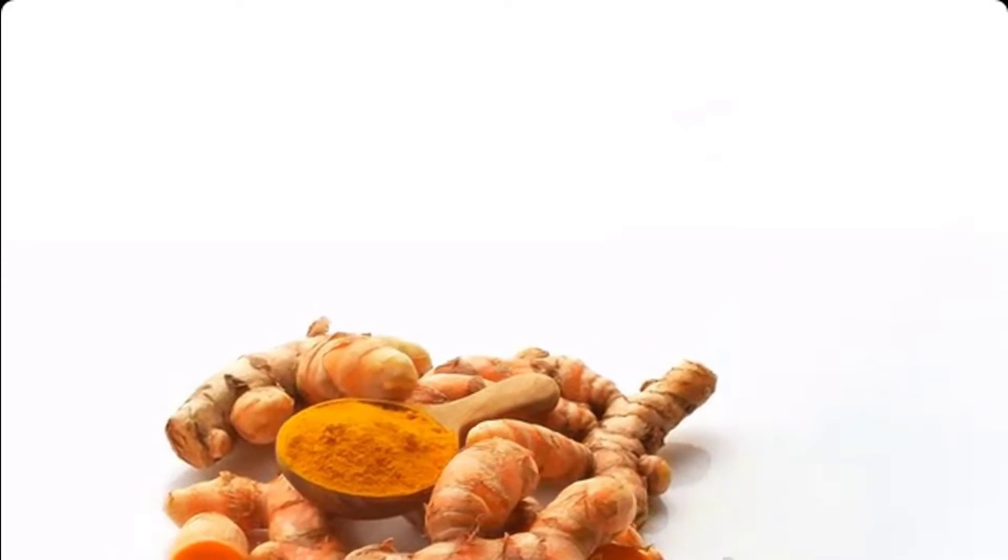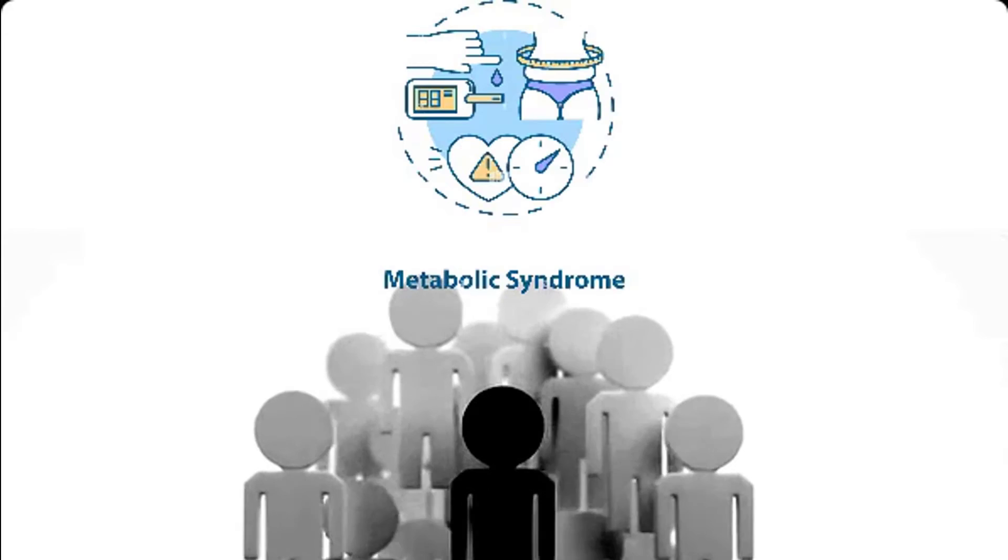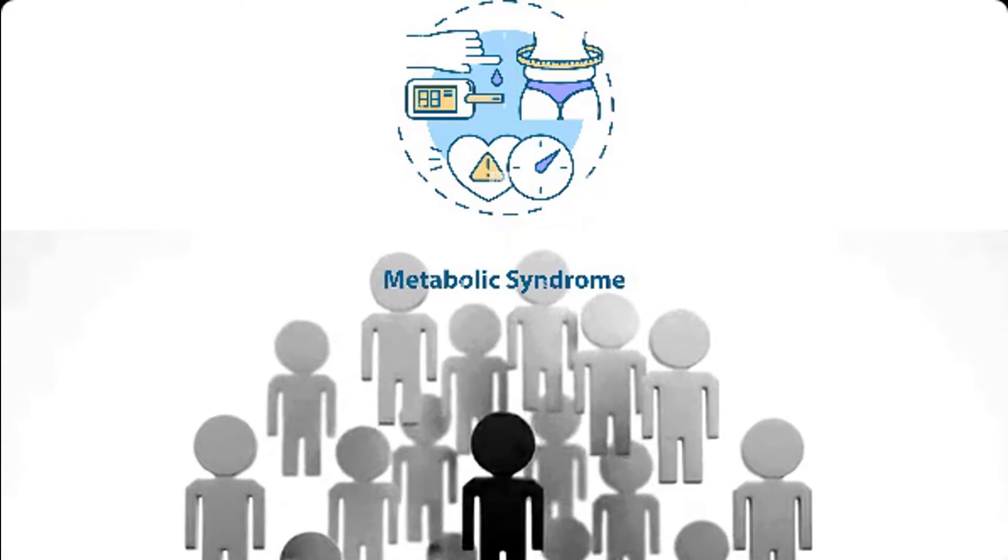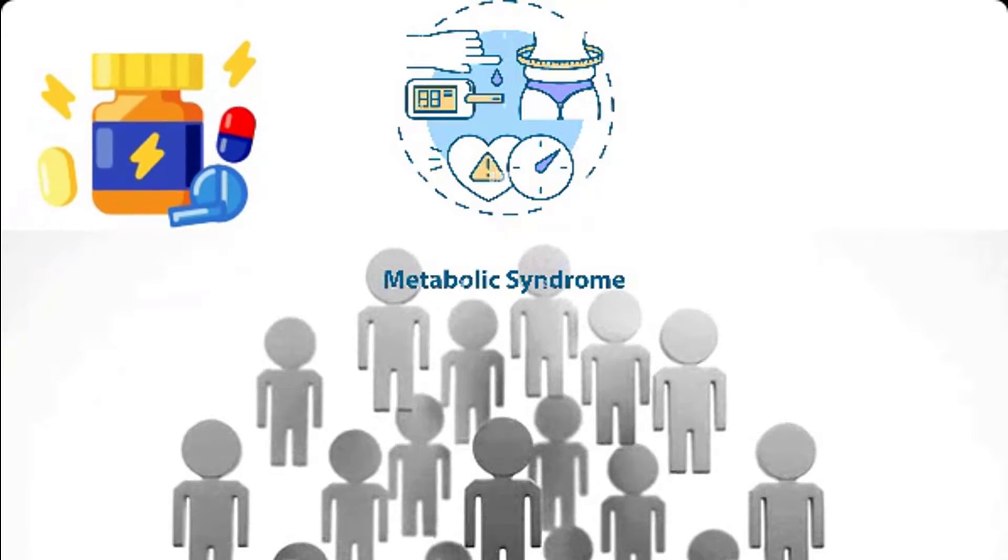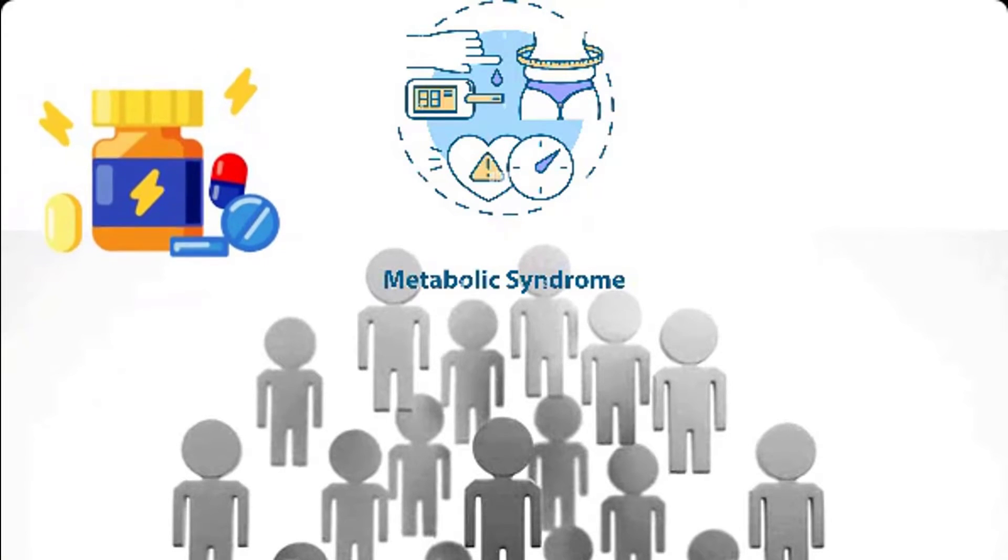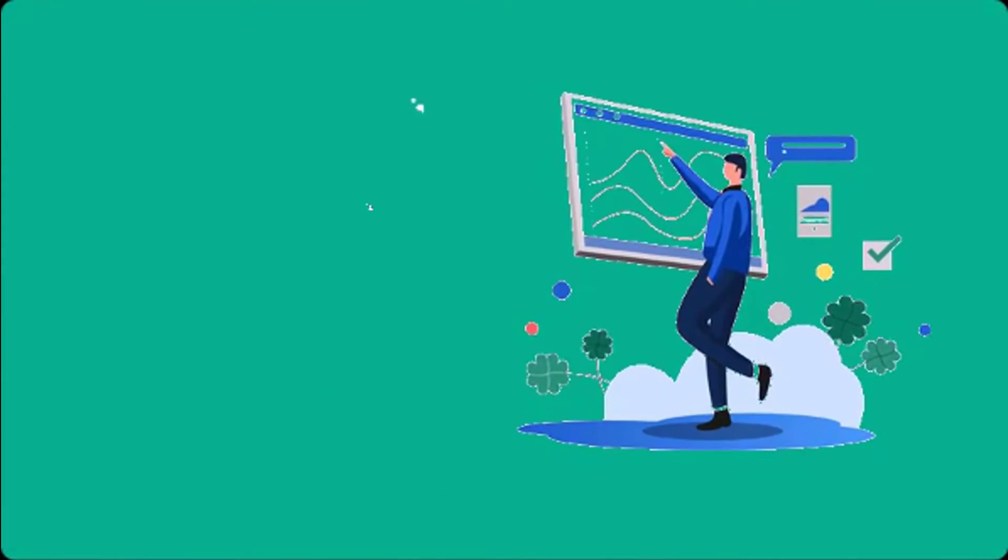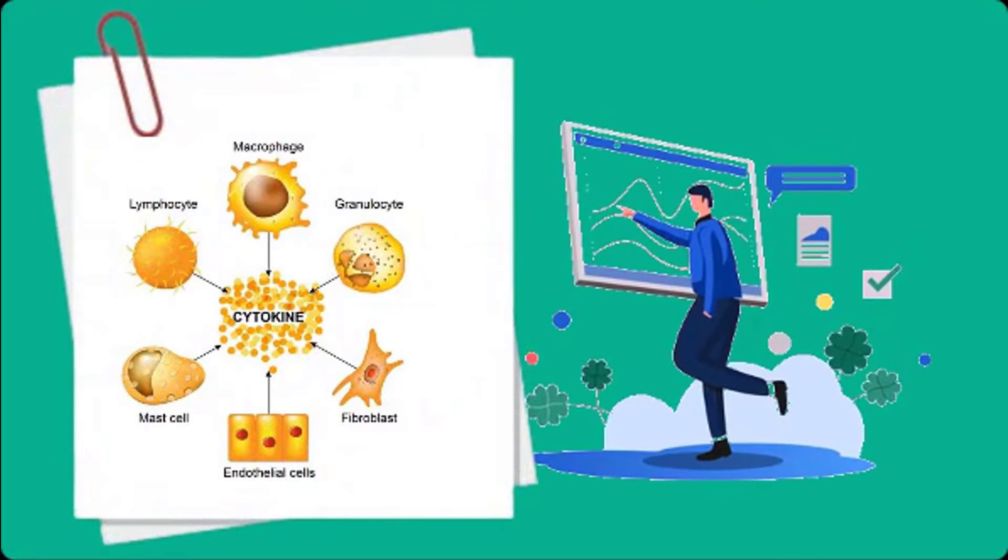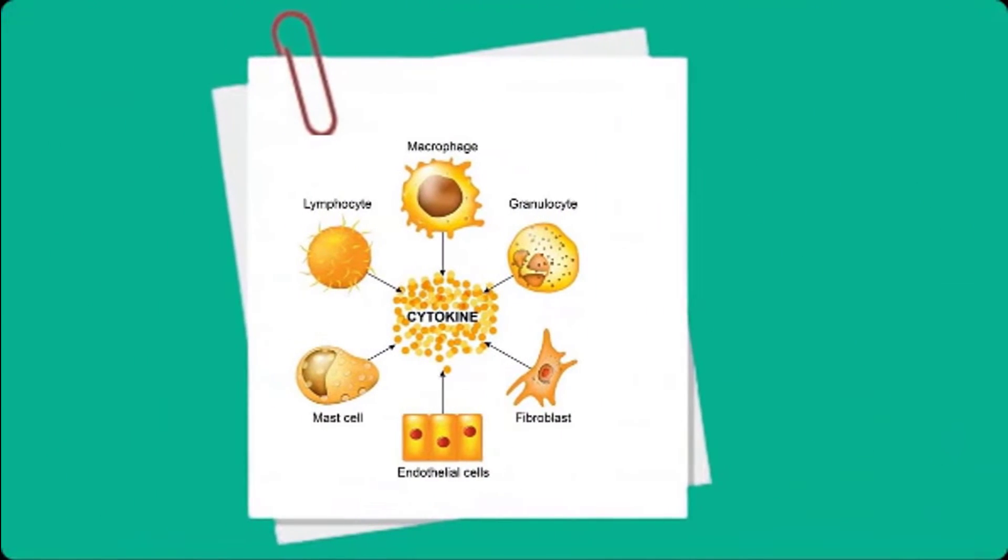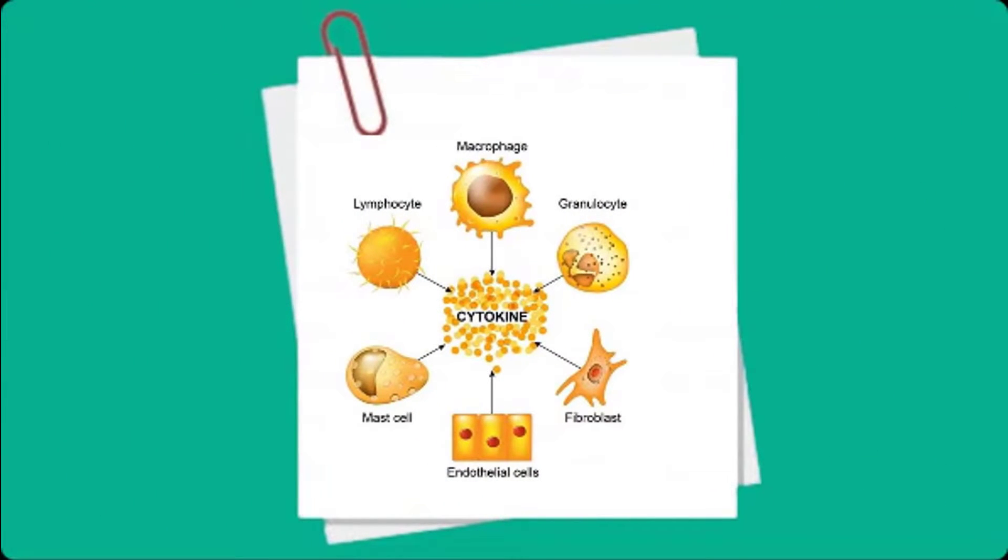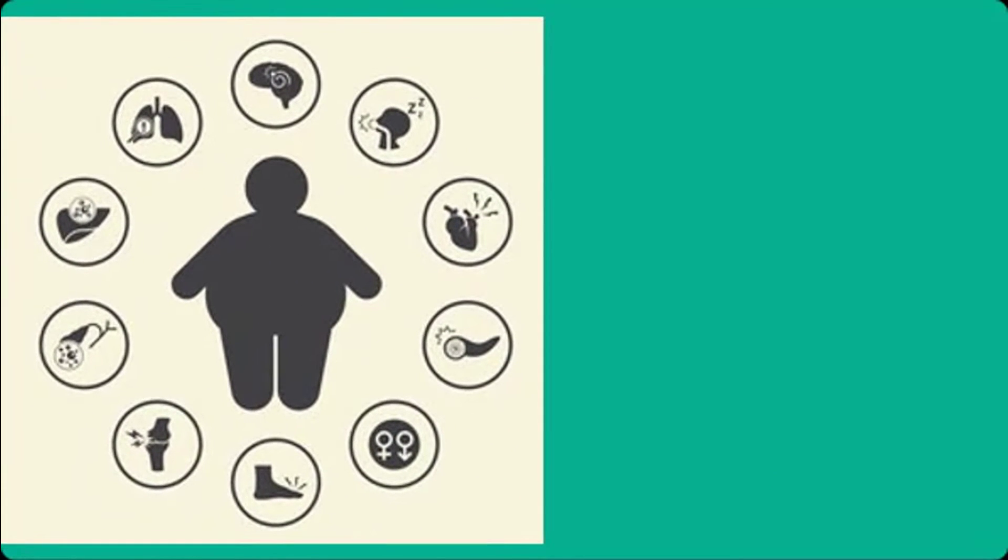A study also showed the antioxidant and anti-inflammatory effect of curcumin. 117 participants, all suffering from metabolic syndrome, had taken a supplement containing curcumin. After the test phase, three inflammatory markers improved. Another study examined the cytokine level. Cytokines are messenger substances that are released during inflammatory processes and can promote the development of chronic metabolic diseases.